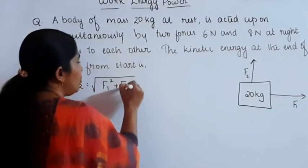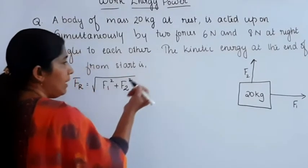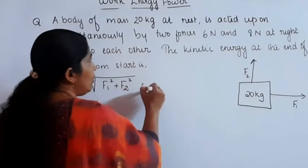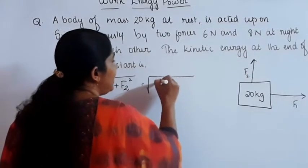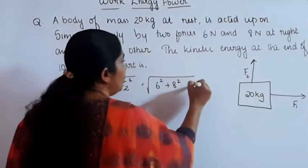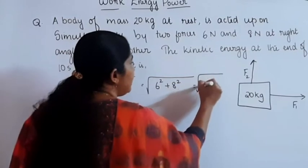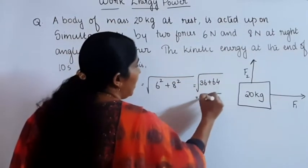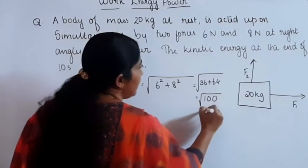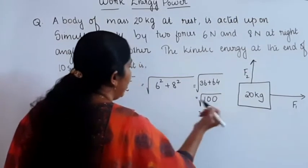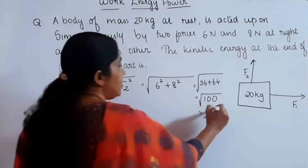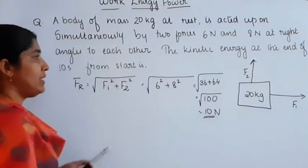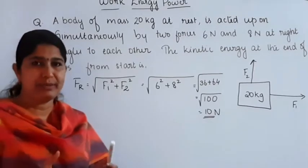Because these two forces are acting perpendicular to each other, FR equals the square root of 6² plus 8², which equals the square root of 36 plus 64, equal to the square root of 100, which is 10. So 10 Newton is the resultant force acting on that body.